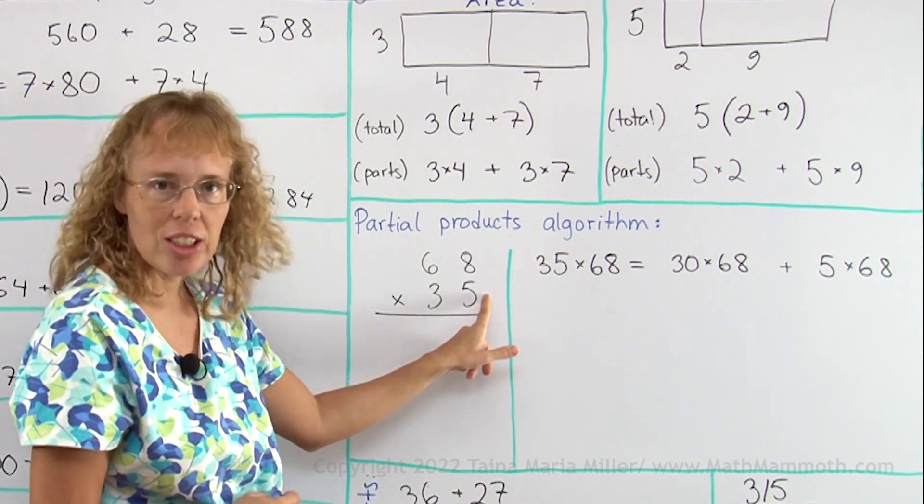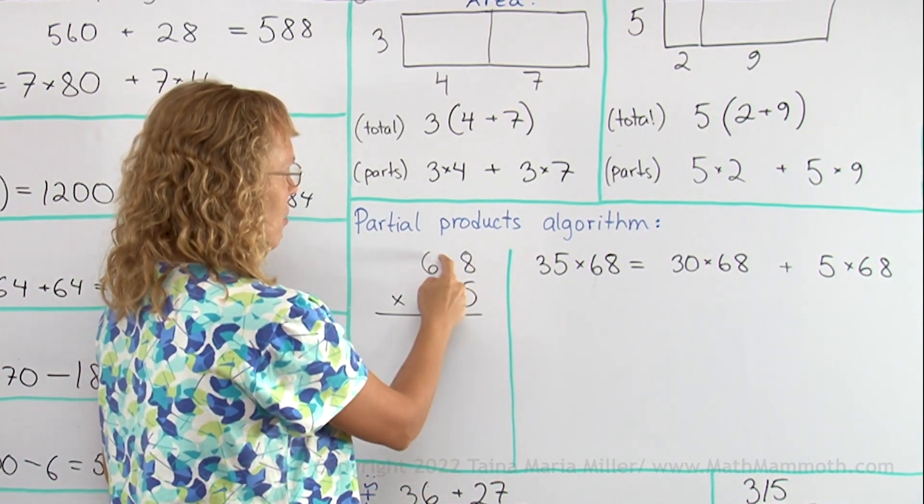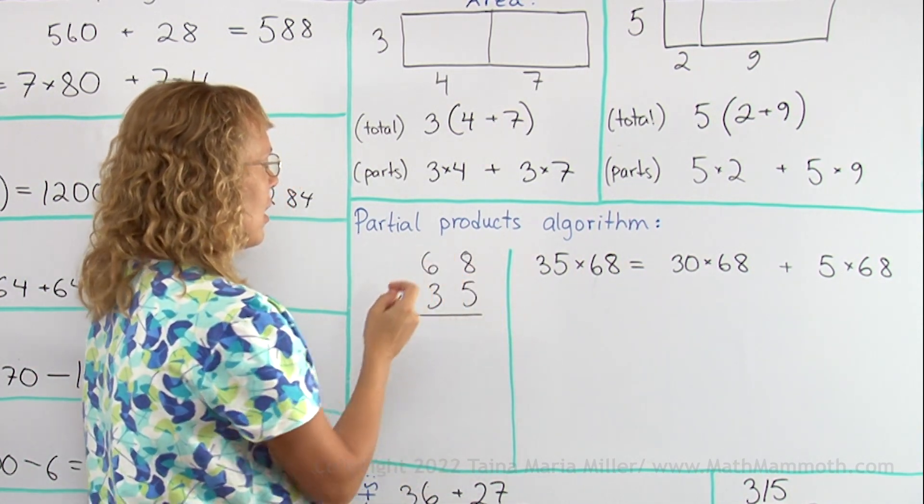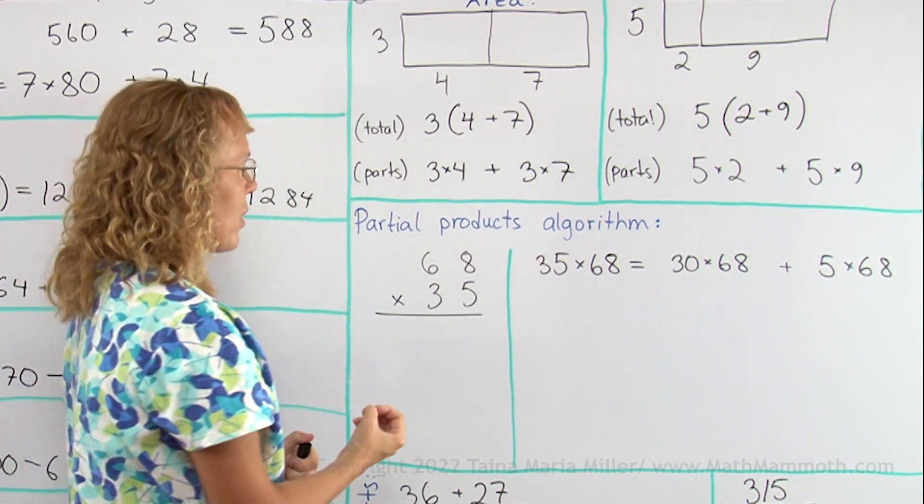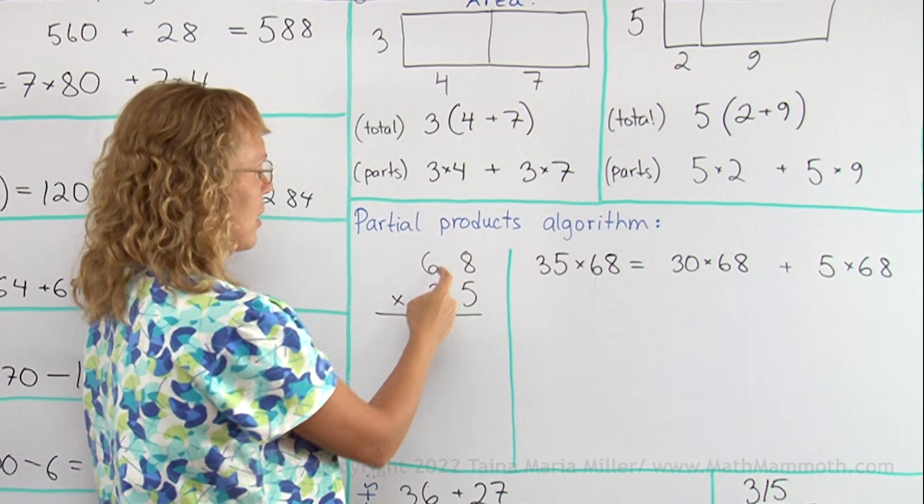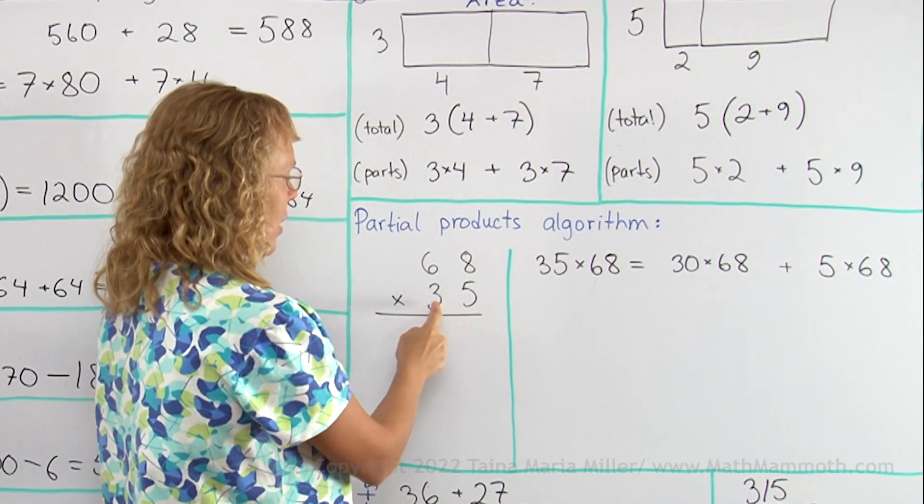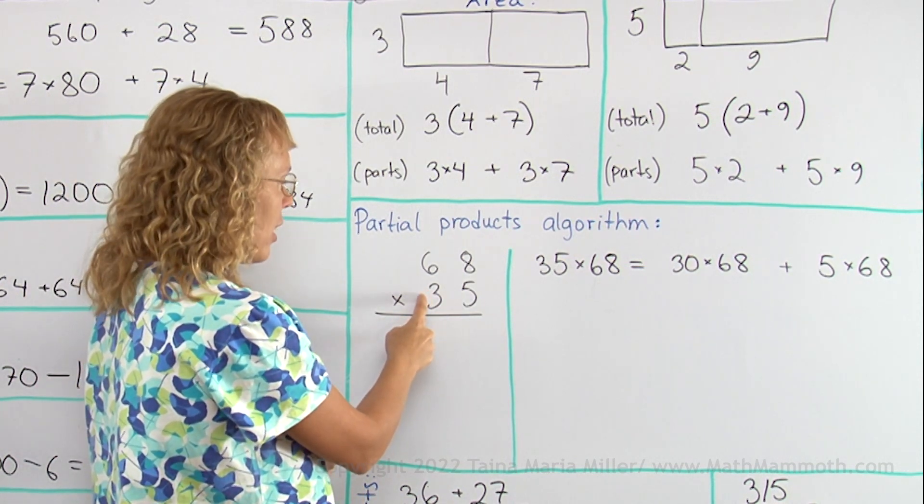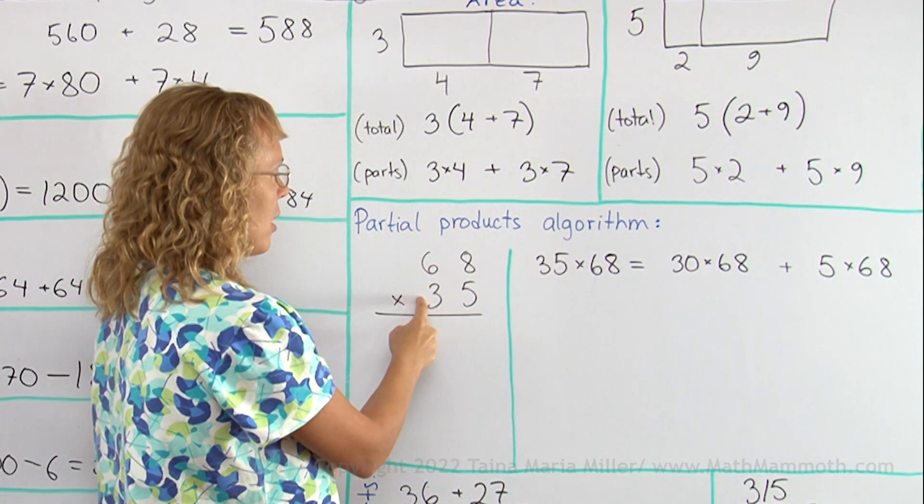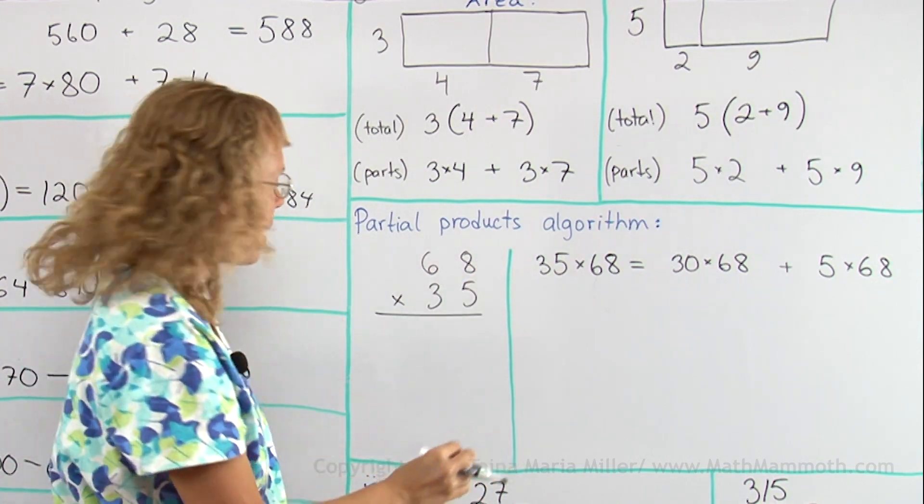We will multiply each digit here by each digit basically. 5 times 8, this times this, this times this, this times that. But we take into account the value of those digits. I'm not gonna just multiply 5 times 6. I'm gonna actually multiply 5 times 60. Or here, this 3 is actually 30. So I will multiply 30 times 60, 30 times 8, and add everything to get the final answer.